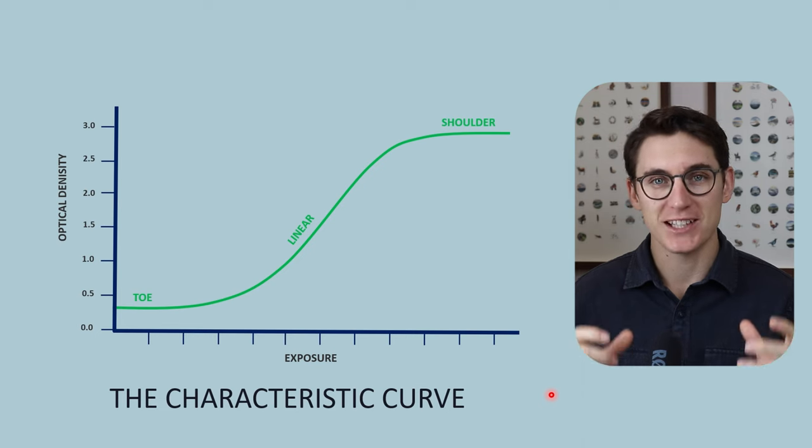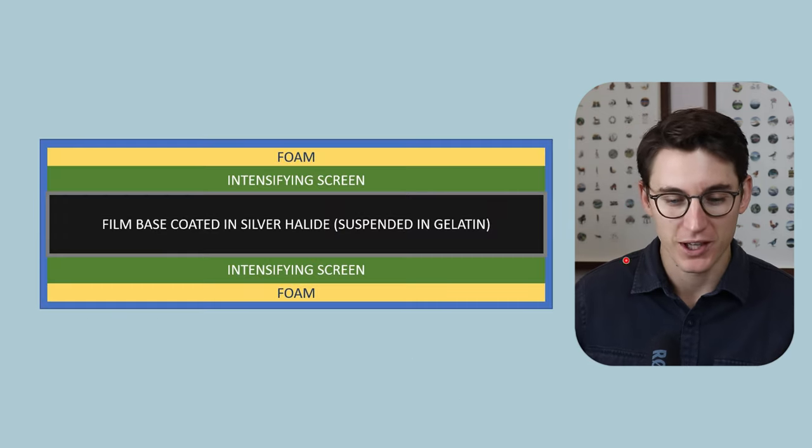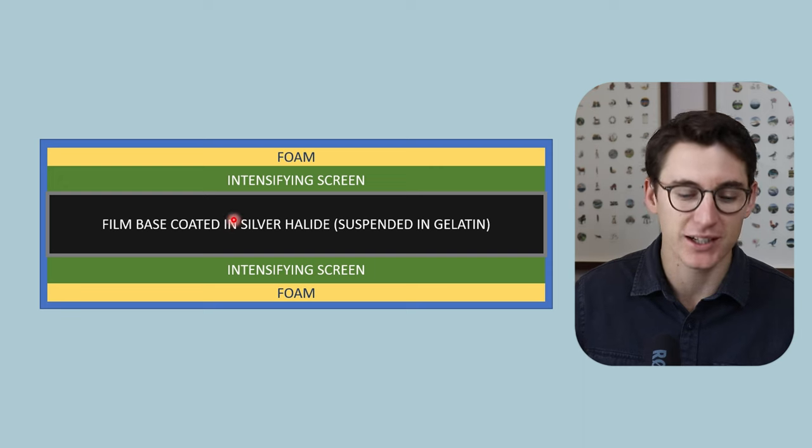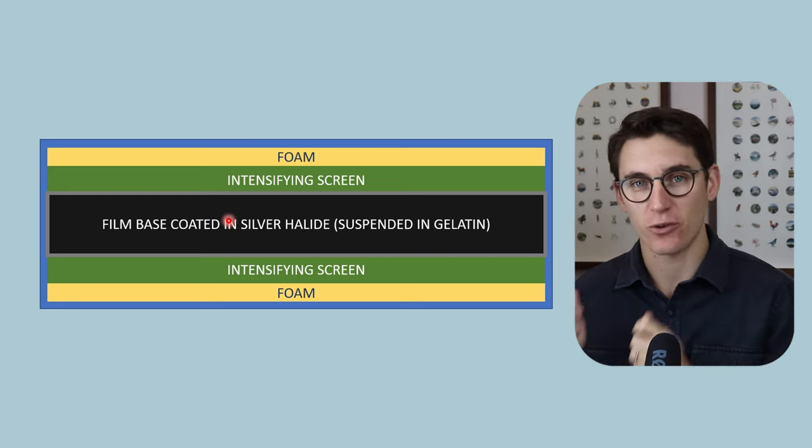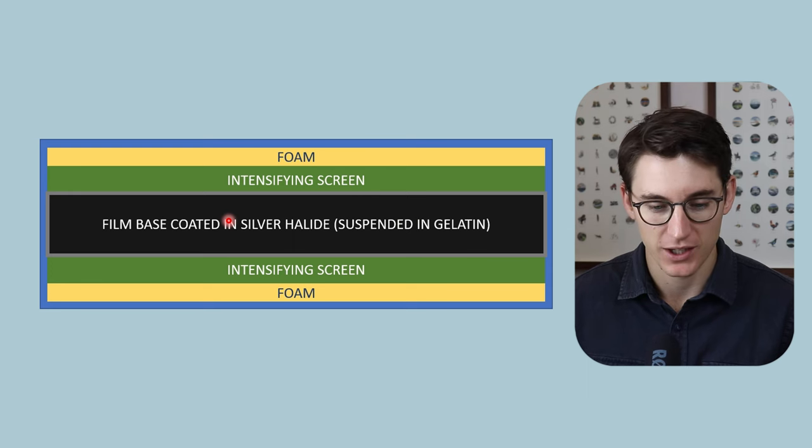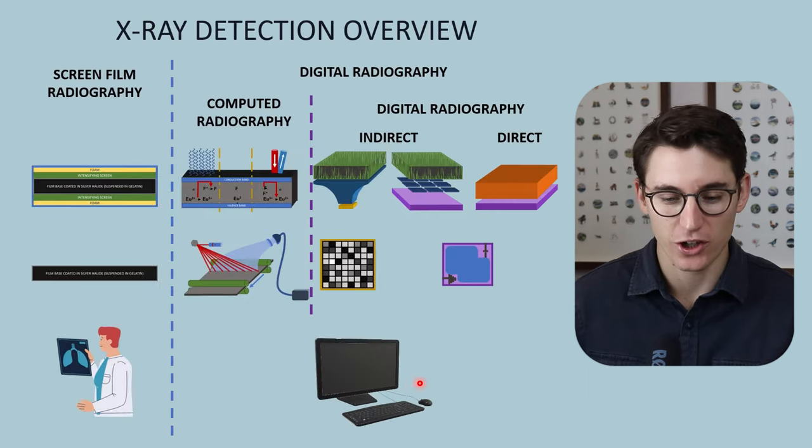We are talking about the specific properties for a screen film. This plastic film within our screen film radiography. Those properties are characteristic for that type of screen film. Now why do we need to know about the characteristic curve?